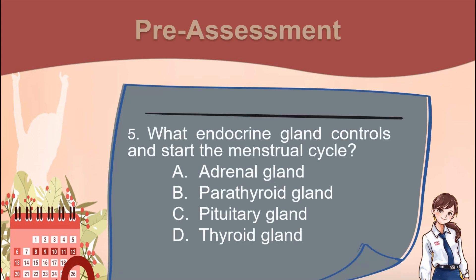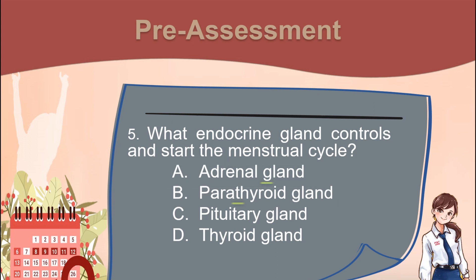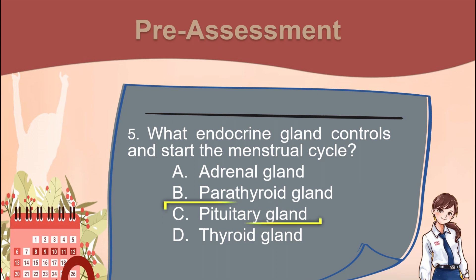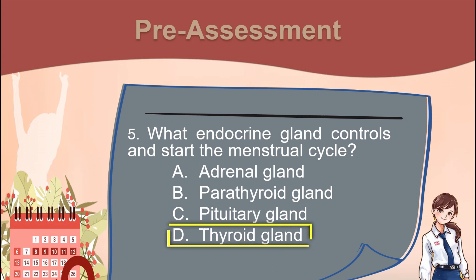Number 5. What endocrine gland controls and starts the menstrual cycle? A. Adrenal gland. B. Parathyroid gland. C. Pituitary gland. D. Thyroid gland.